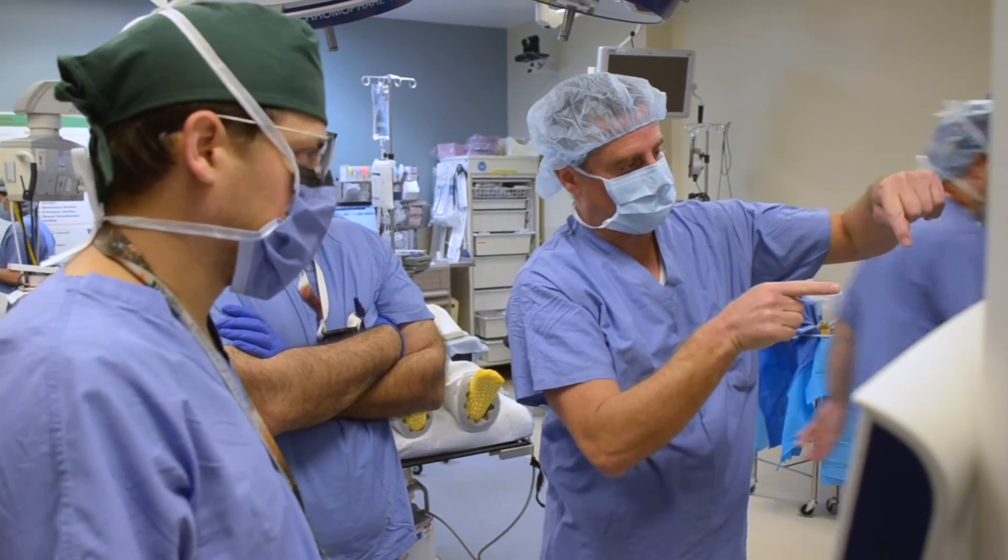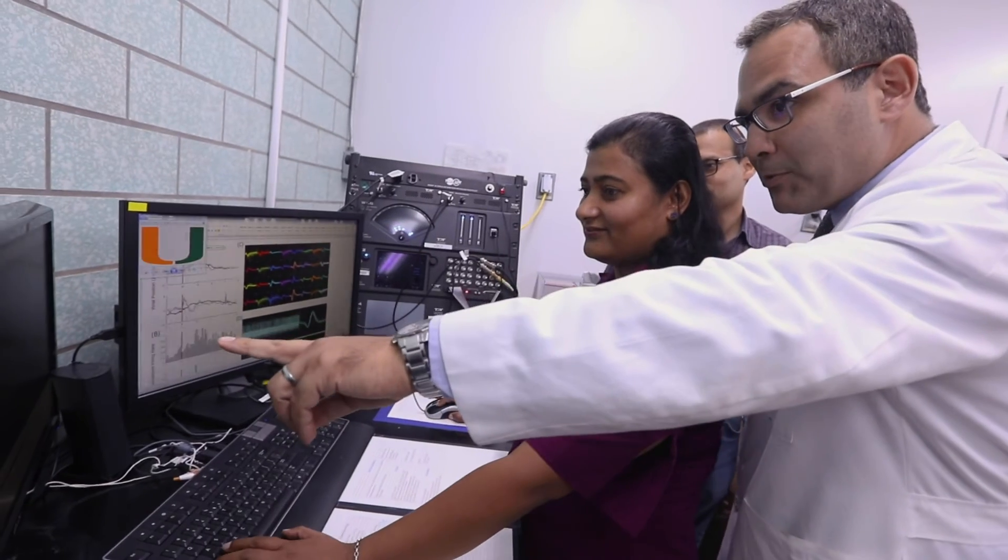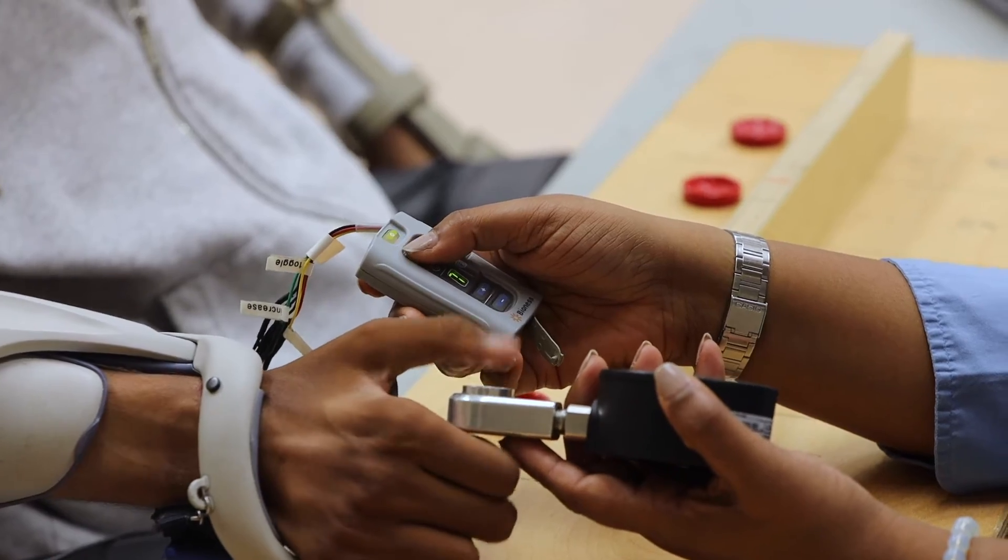As part of the study, devices were implanted in Herman's chest and brain. When he thinks about moving his hands, it sends signals to a computer that communicates wirelessly to an orthotic glove.